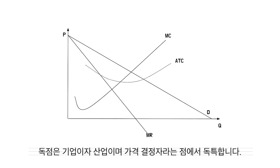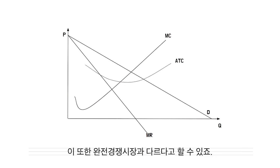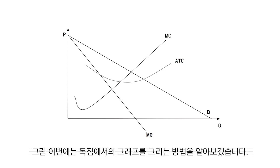A Monopoly is unique in that it is both the firm and the industry and price maker, which is also different from perfect competition. Then let's see how to draw a graph in a Monopoly.